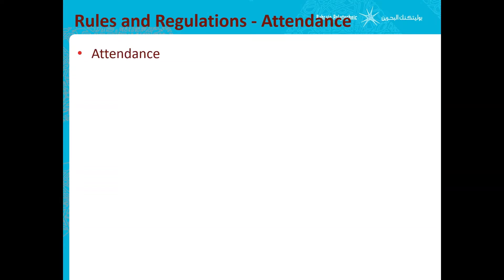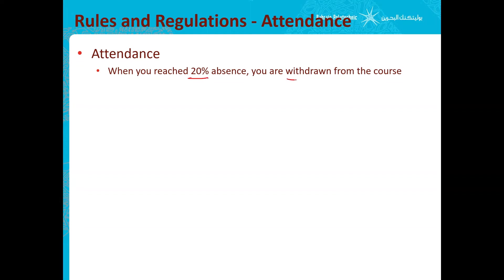Attendance is a big one — a lot of people fail courses because of attendance. I would highly recommend that you make sure your absence does not reach 20%, because as soon as your absence reaches 20%, you're withdrawn from the course and receive a grade called WA, which is equivalent to failing. Make sure to check your attendance on your self-service banner and keep track of it.